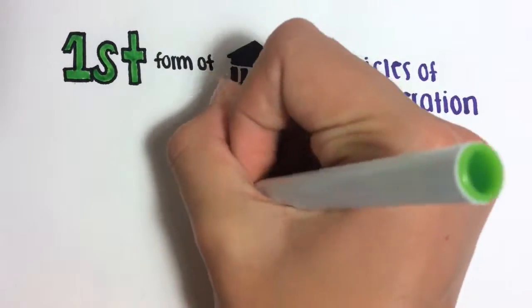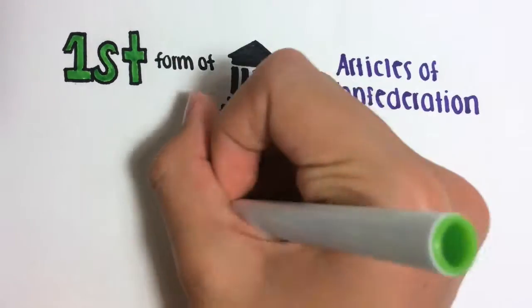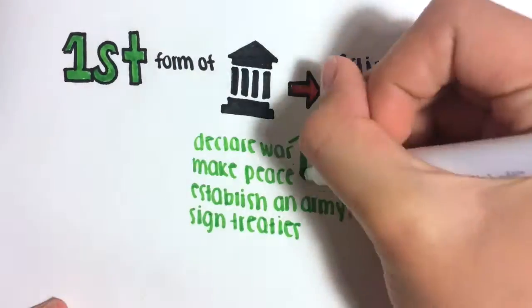The Articles could do so many things, like declare war, make peace, establish an army or navy, and sign treaties.